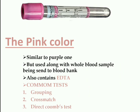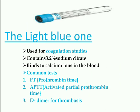Next we have the pink tube. It is similar to the purple tube, containing EDTA, but is only used with whole blood samples sent to the blood bank. Common tests done from this tube are blood grouping, cross-match, and direct Coombs test.